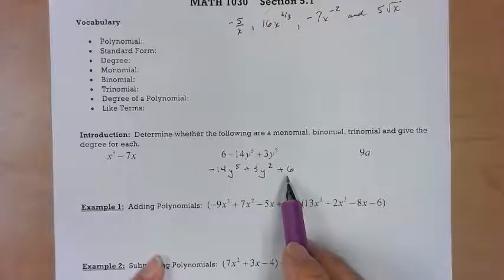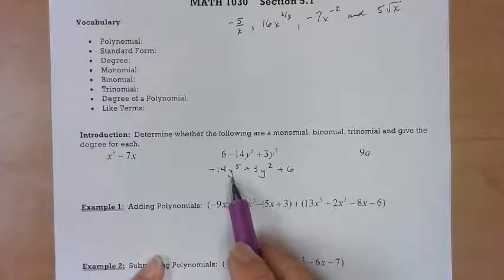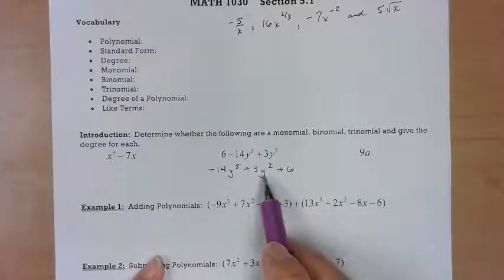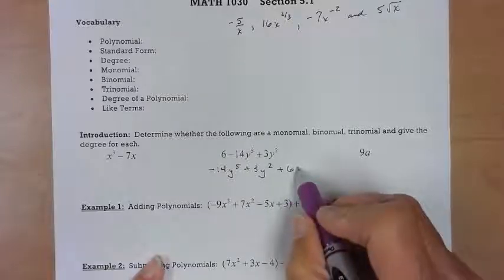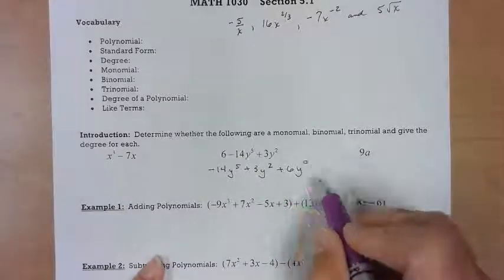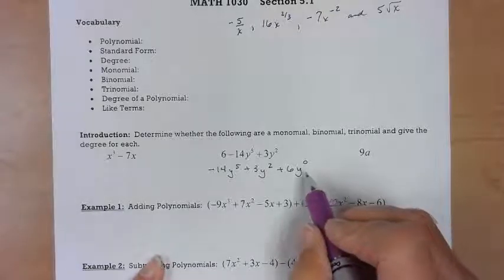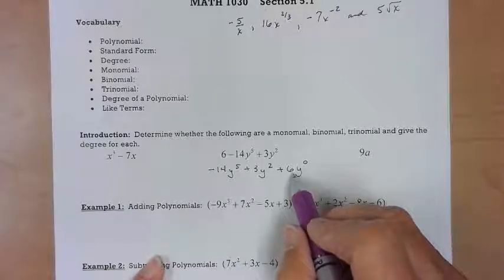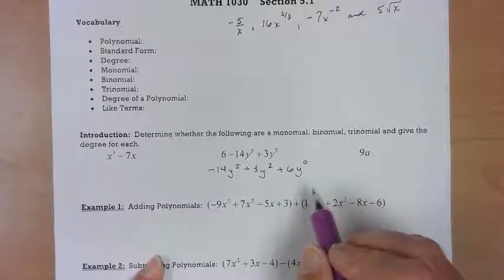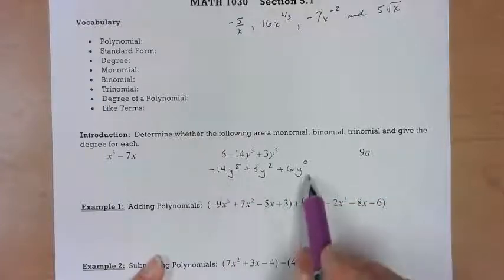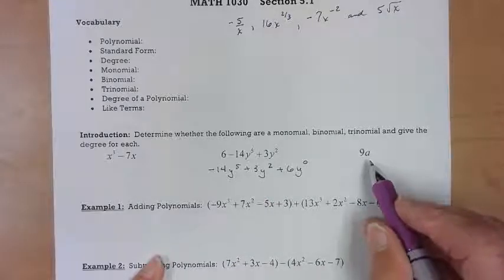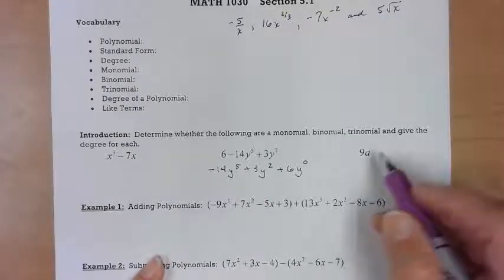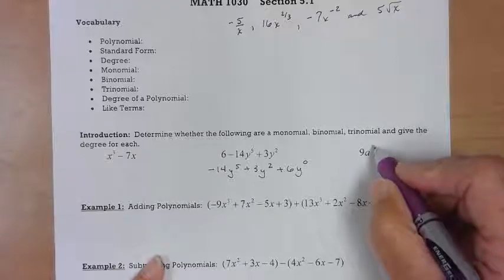So this is - I've got one, two, three terms - that's a trinomial, and the degree of this term is five, the degree of this one is two, the degree of this one is zero because we can have - we don't see it but Y to the zero equals one - so if you have a constant it's understood to be a degree of zero. Now the degree of the polynomial would be five. This one all by itself, this is a monomial - its degree is one, it's understood.